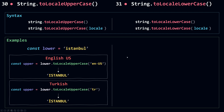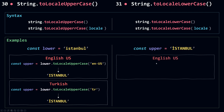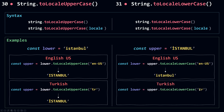Now let's see examples with toLocaleLowerCase. I have 'ISTANBUL' in uppercase, where the I has a dot at the top. If I use toLocaleLowerCase with English US as the locale, I get 'istanbul' — the expected result. And if I use Turkish as the locale, I also get 'istanbul' lowercase as expected. And that's it for toLocaleUpperCase and toLocaleLowerCase — let's move on to the next method.